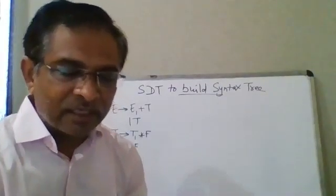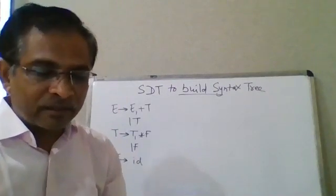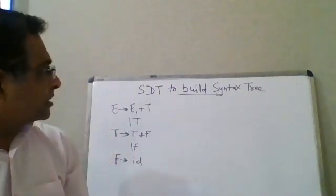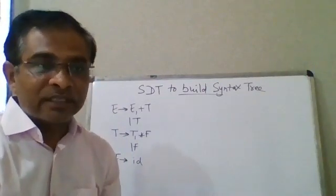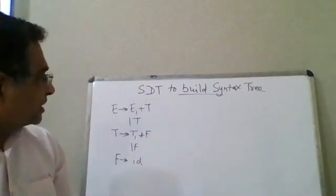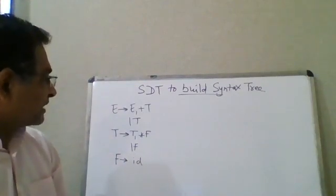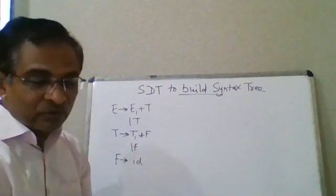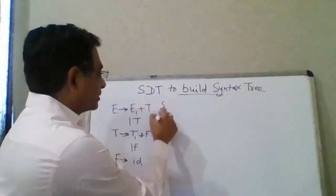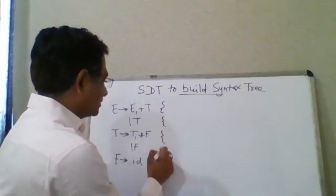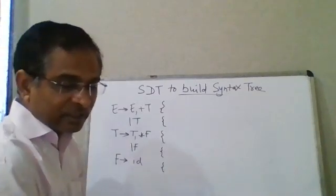Let's continue with the SDT topic. The topic here is to build the syntax tree using SDT. We continue with the same grammar: E → E1 plus T or T, E → T1 star F or F, and F → id. What is the appropriate action part for each of these so that it could generate the appropriate parse tree?